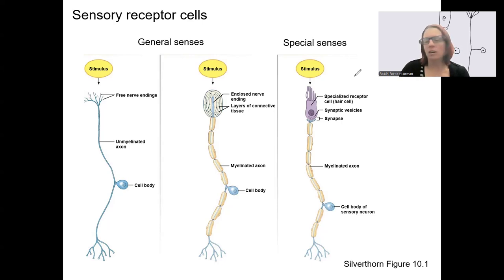So on the left, these include two different types. One is free nerve endings, which are also called unencapsulated, no capsule. And over here, also part of general senses, can be capsulated.